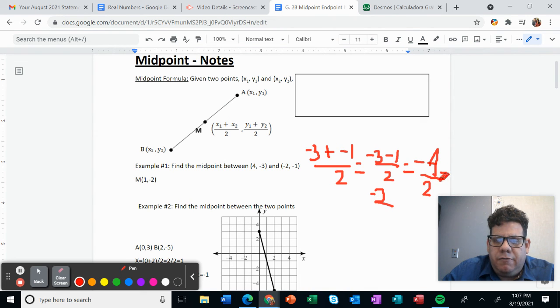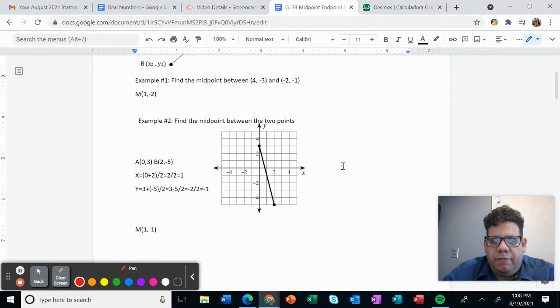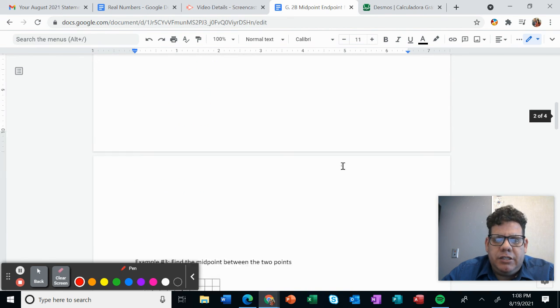So this is the answer for that, negative 2. This is one way to find the midpoint, I mean, we're going to use the same over and over, but sometimes we can use the graph, we can use the graph just to give us a better understanding of this. If you check this example, this example number 2,